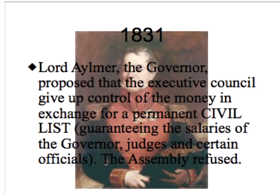In 1831, Lord Aylmer, the Governor, proposed that the Executive Council should give up control of the money in exchange for a permanent civil list of salaries. Once again, the Assembly refused.